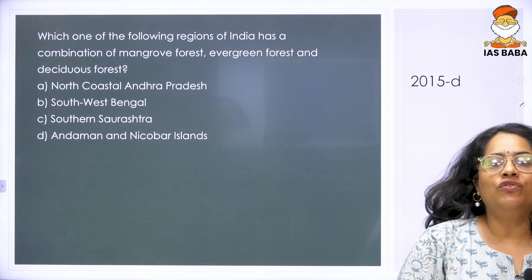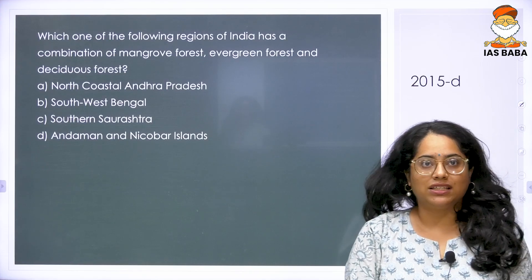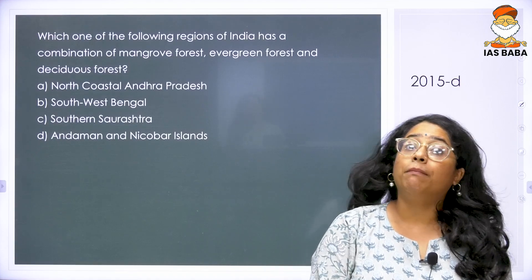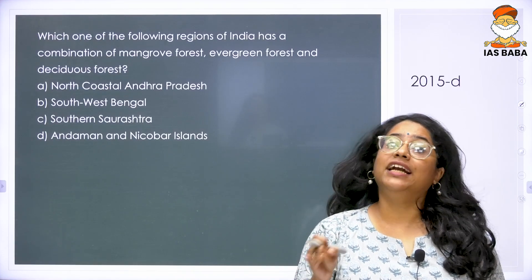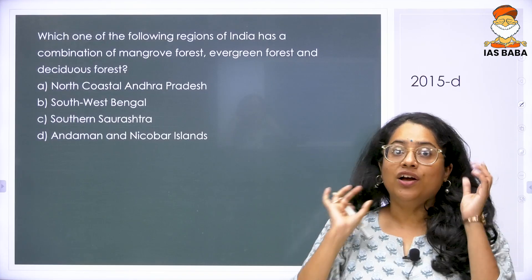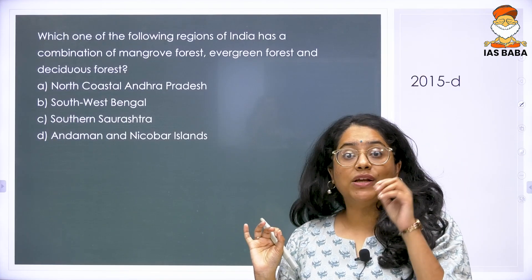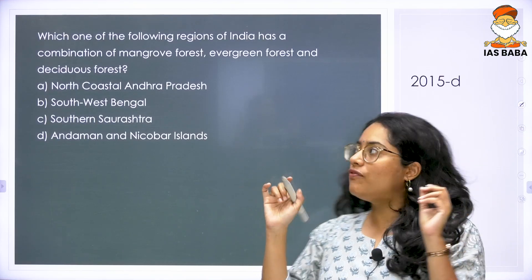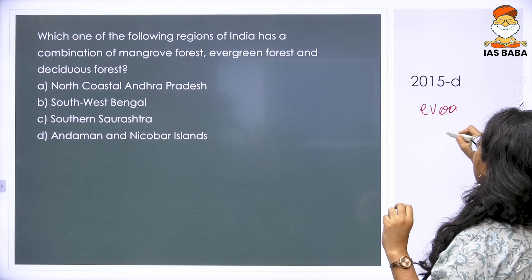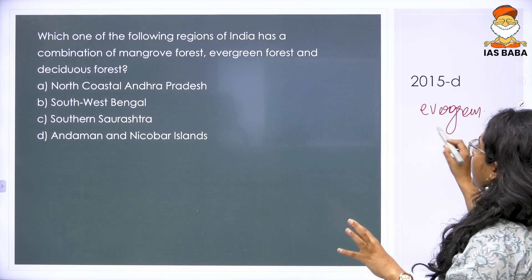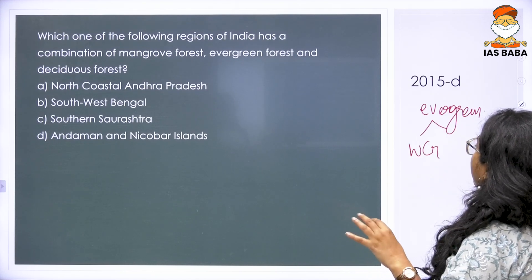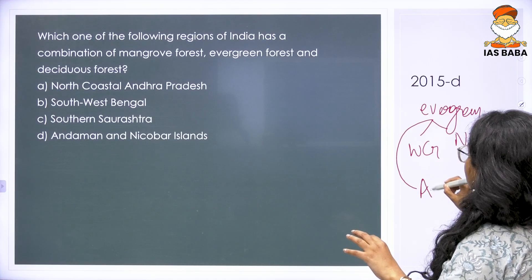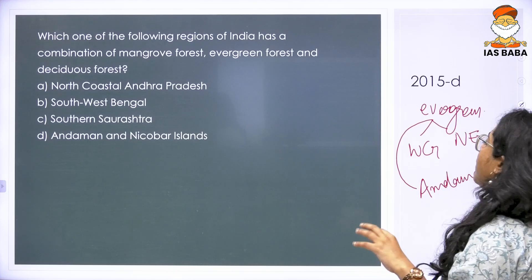Moving further on, we have a 2015 question which reads: which one of the following regions of India has a combination of mangrove forest, evergreen forest, and deciduous forest? We are looking for some area. Let us start from the evergreen part, because there are very few areas in India with evergreen forest. If you look at the evergreen areas in India, you have them in the Western Ghats, in the Northeast, and in the Andaman. These are the only places in India where you have evergreen forest.